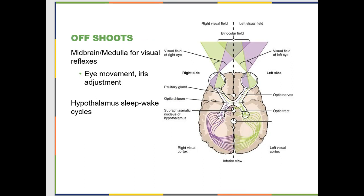Your visual pathway has offshoots — not essay questions. You have nuclei in your midbrain and medulla responsible for visual reflexes: controlling your iris, eye movement, and ciliary muscle. Your hypothalamus is also aware of how much daylight you're exposed to, because that controls your sleep-wake cycles. It's melatonin that helps you fall asleep, and the part of the brain that releases melatonin has to be told how much light you're exposed to — and that's the hypothalamus.